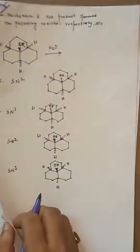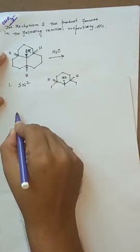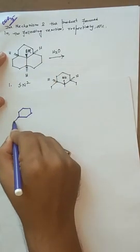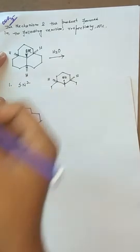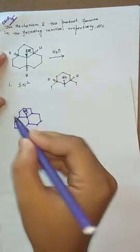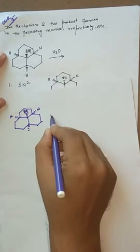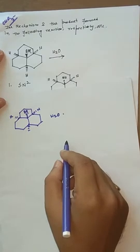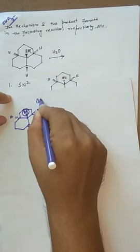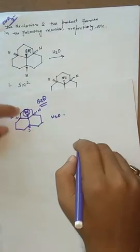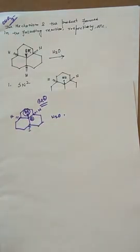First, we observe that the compound is a fused cyclohexane system. In this fused cyclohexane system, the OH group is above the plane and there are three hydrogen atoms and one H₂O molecule. After removal of the bromine atom as Br⁻ — which is a good leaving group — there is a possible chance of formation of a 3° carbocation.